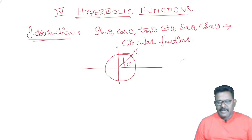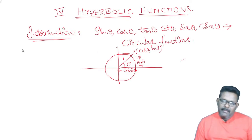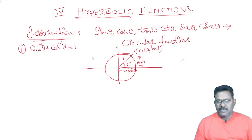It is a unit circle with radius 1. The point on the circle has coordinates cos theta and sin theta. From the right-angle triangle, sin squared theta plus cos squared theta is equal to 1.